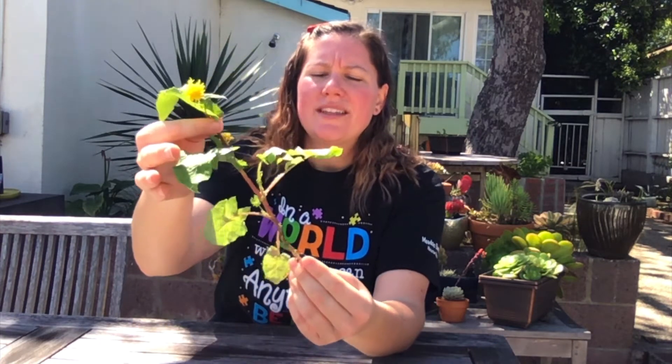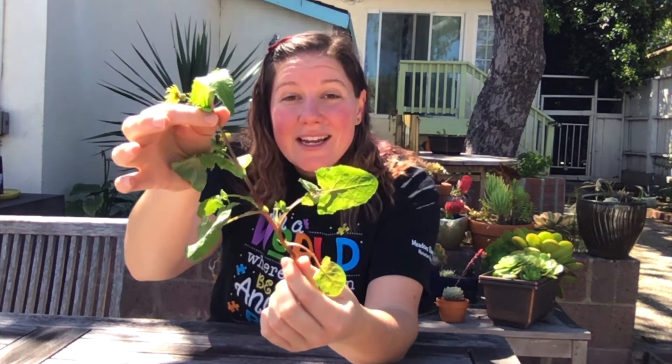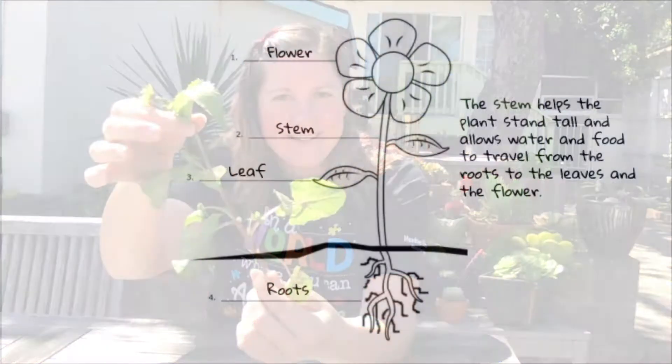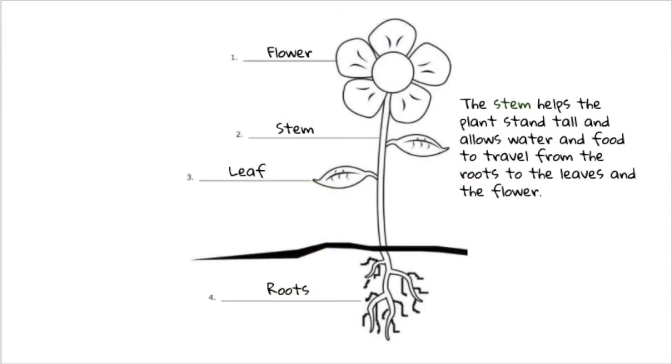As we move up our plant, we climb up the stem. What do you notice about the stem that's different than the roots? The roots are underground, but the stem is not. It's long and it stands up tall, and that makes it really good at what it needs to do. The stem helps the plant stand tall and allows water to travel from the roots up to the leaves and the flower, and food to travel from the leaves to the roots and the flower as well.